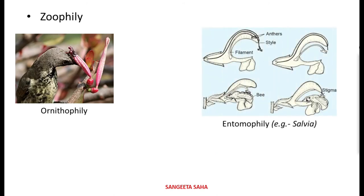Next is entomophily, where the flowers are known as entomophilous flowers and are pollinated by insects. The flowers are very attractive and brightly colored with bright petals, and they have a lot of fragrance to attract insects. They have broad stigmas or anthers to allow the insect to perch on them. The pollen grains here are very spiny, which helps them stick onto the body of the insects so the pollen grains can be carried by the insects.